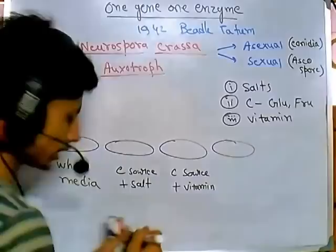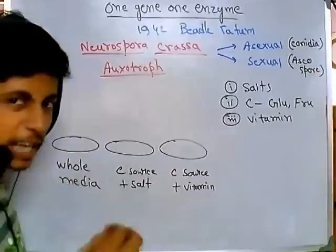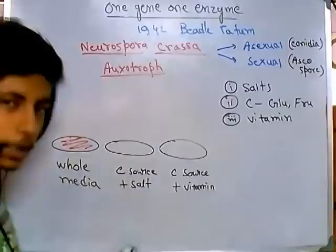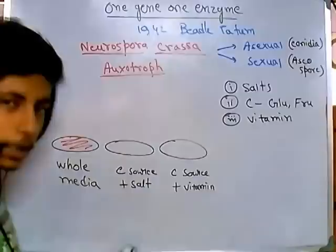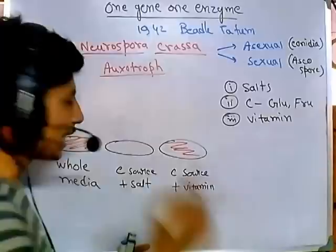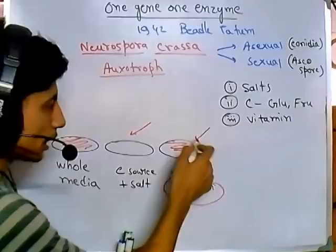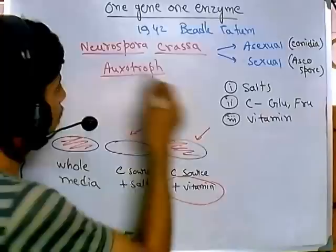They set up plates with: whole media, carbon source plus salt, and carbon source plus vitamin. They observed that on the whole media there was normal growth; on carbon source plus salt there was no observable growth; but on carbon source plus vitamin there was growth. This told them that a vitamin is an essential requirement, indicating those auxotrophs produced by X-ray radiation were vitamin auxotrophs — they had lost the capability of producing their own vitamins.